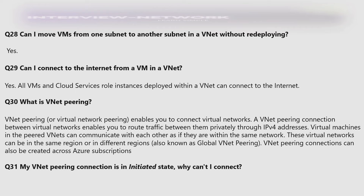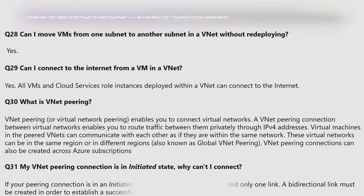My VNet peering connection is in an 'Initiated' state — why can't I connect? If your peering connection is in an initiated state, this means you have created only one link. A bi-directional link must be created in order to establish a successful connection.